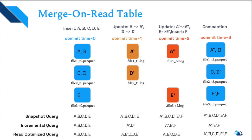At time T2, A is updated to A'', E is updated to E', and new record F is inserted. Snapshot query returns the latest snapshot; incremental query shows A'', E', and F; read-optimized query still returns A, B, C, D, E since updates remain in the log file. At time T3, compaction occurs — Apache Hudi merges and creates a base file. Now read-optimized query reflects the latest data: A'', B, C, D', E', and F.